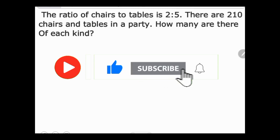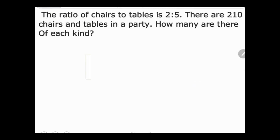Word problem: The ratio of chairs to tables is 2 to 5. There are 210 chairs and tables in a party. How many are there of each kind?